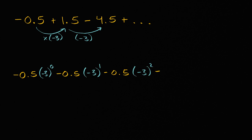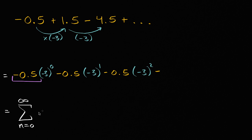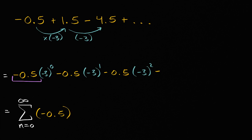Or we could write this in sigma notation. This is equal to the sum from n equals zero to infinity — we're just going to keep going on and on forever. It's going to be negative 0.5 times negative three to the nth power. Here, this is when n is zero, here is n is one, here is n is equal to two.